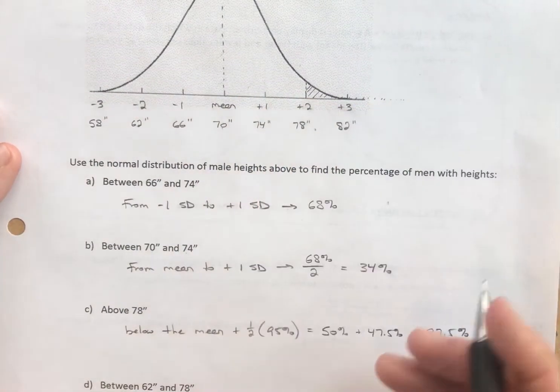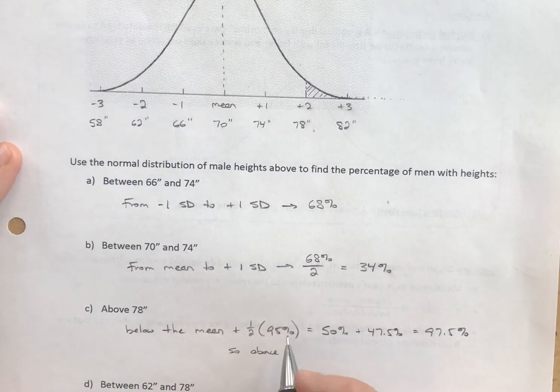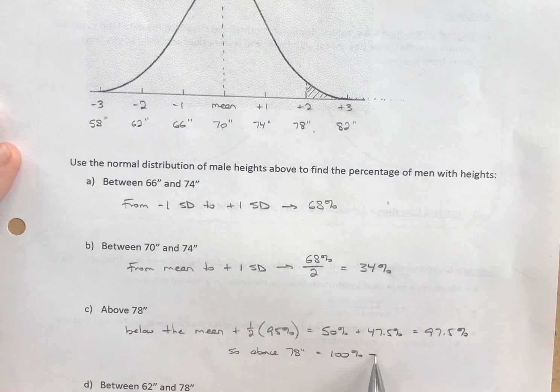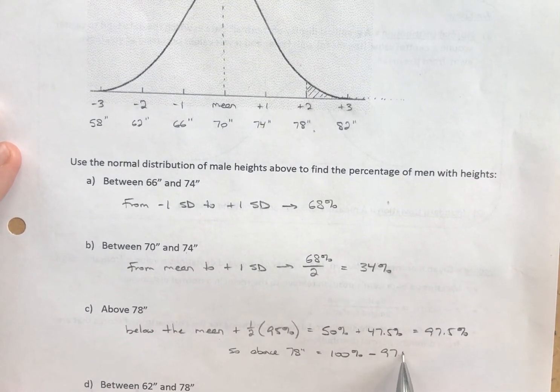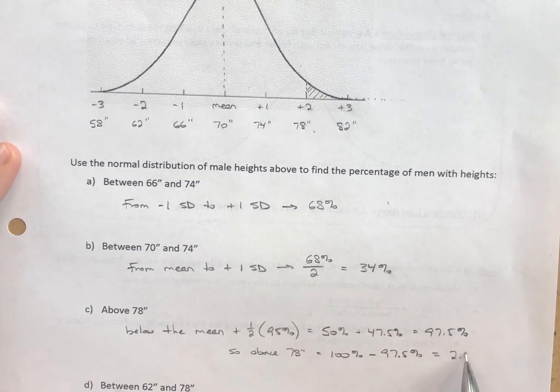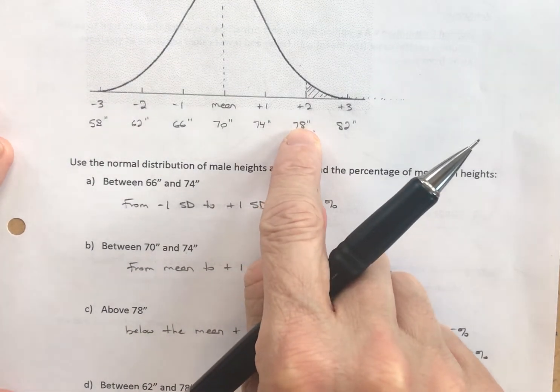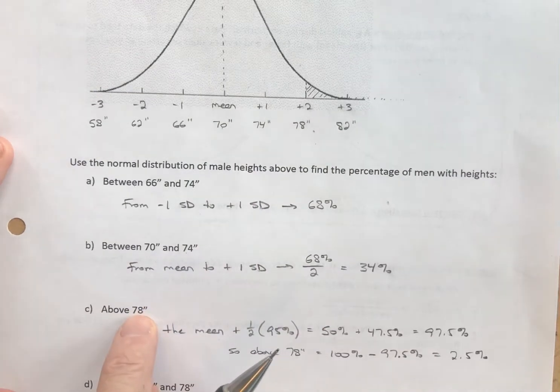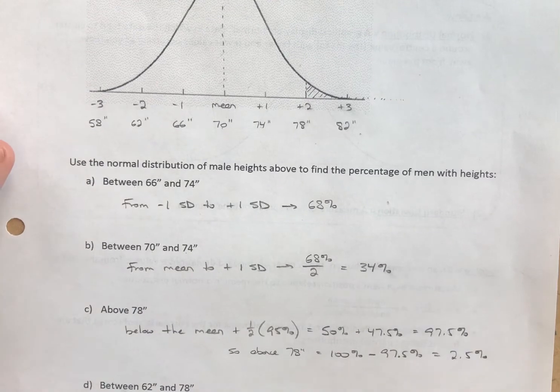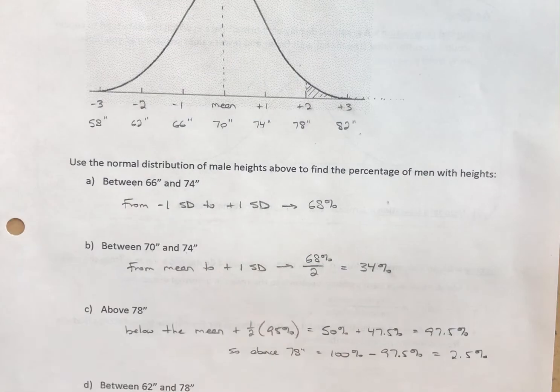How many are above? We'll take 100, subtract that. Above 78 inches is 100% minus 97.5%. So only 2.5% of adult men are taller than 78 inches, are taller than 6 foot 6. That's one way to do it. There are probably two or three ways to do it, but that's the way I chose to do it.